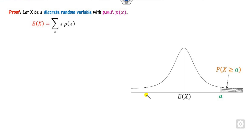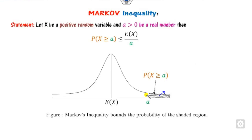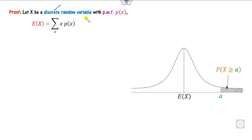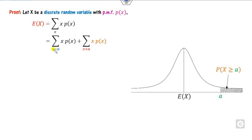The proof is very simple. Since X is a positive random variable, let's first assume X is discrete. We can similarly discuss the continuous case. This is the value of the expected value, and you can break the sum of X into two parts: one where X is less than A, and the second where X is greater than or equal to A. The sum of these two quantities will always be greater than each individual quantity.